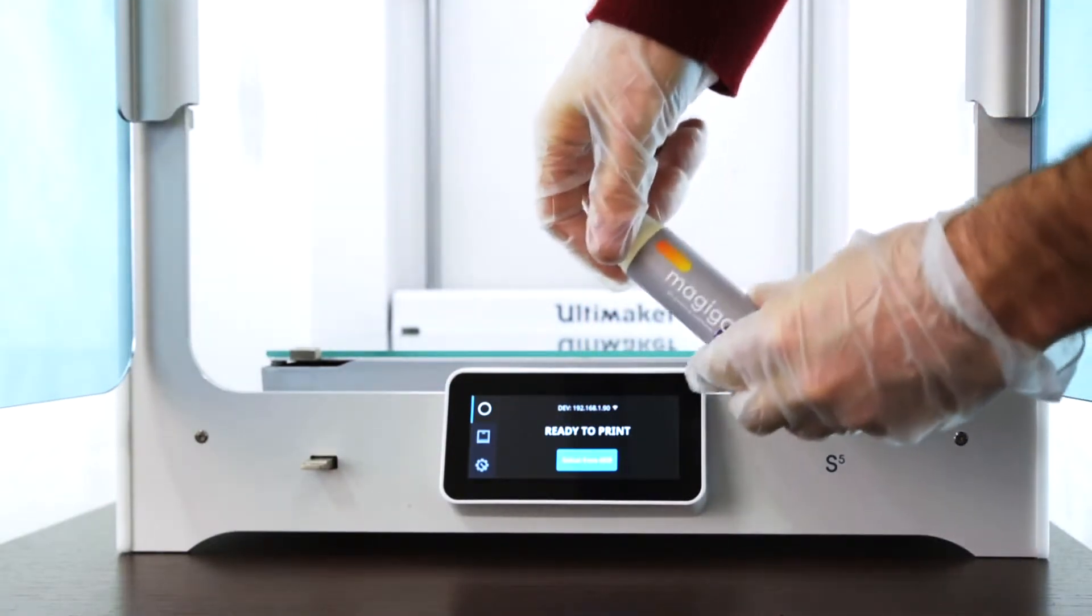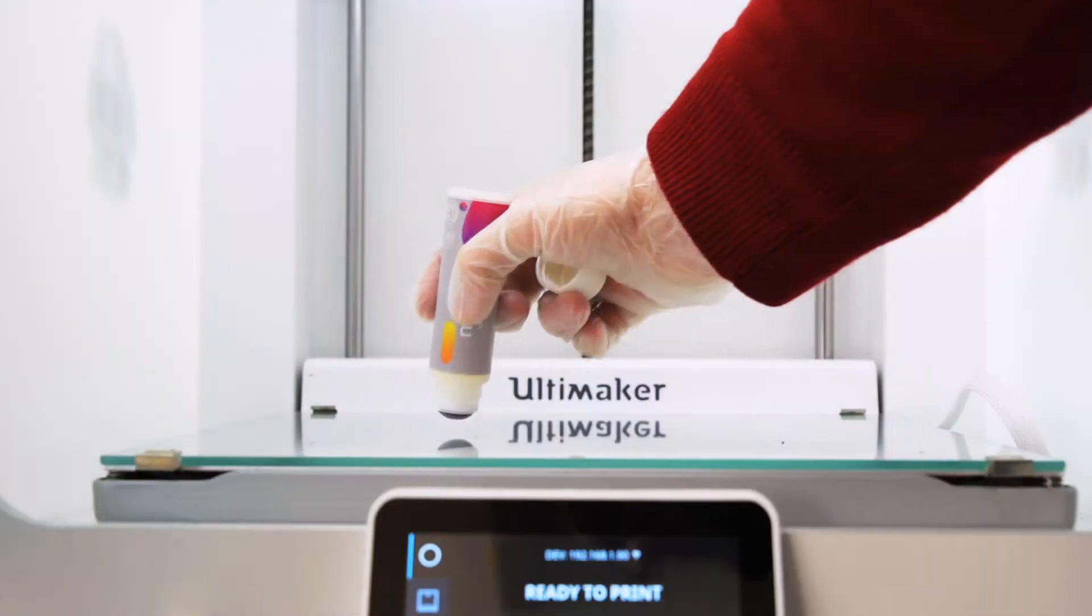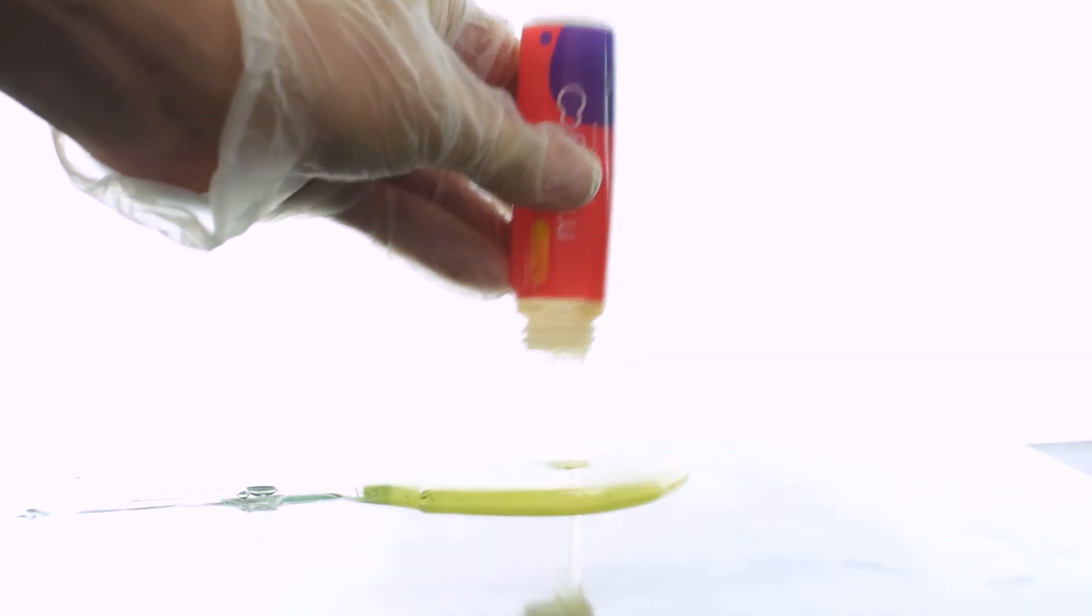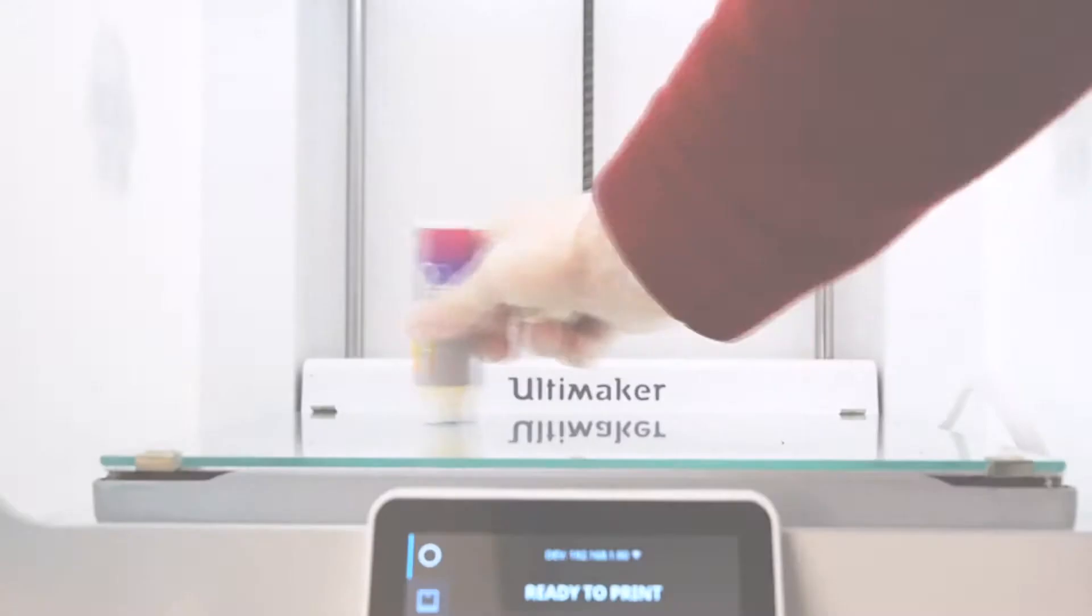The Magigoo applicator has a spring valve inside. To activate, press the applicator against a cold bed firmly to make the glue flow. Note that squeezing the bottle hard when the valve is closed may pop the applicator and spill all the contents.